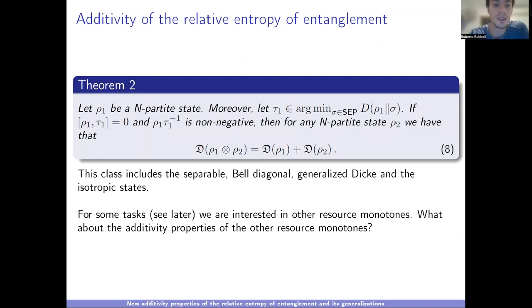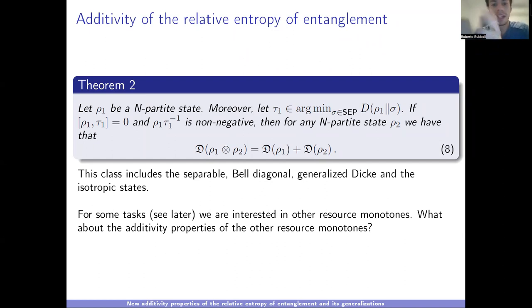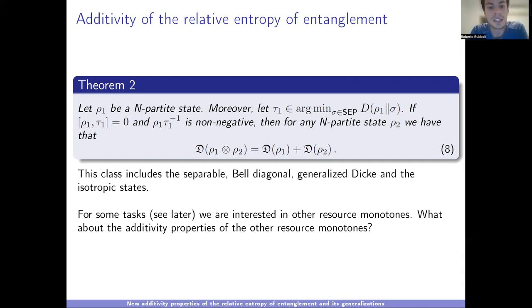The second result is for n-partite states. If the optimizer τ of the relative entropy of entanglement commutes with the input state, and the product τ⁻¹ρ in the decimal matrix sense has non-negative entries in the product basis, then for any n-partite state ρ₂ the relative entropy of entanglement is additive. This class includes separable states — tensoring any state with a separable state doesn't increase relative entropy of entanglement. It also includes Bell diagonal states, generalized decay states, and isotropic states.